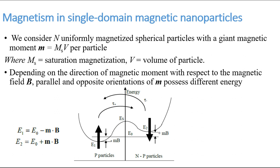Consider any uniformly magnetized spherical particle with a giant magnetic moment m equal to ms multiplied by v per particle, where ms is the saturation magnetization and v is the volume of the particle. In the presence of an applied magnetic field B, the two-level energy barrier is disturbed.